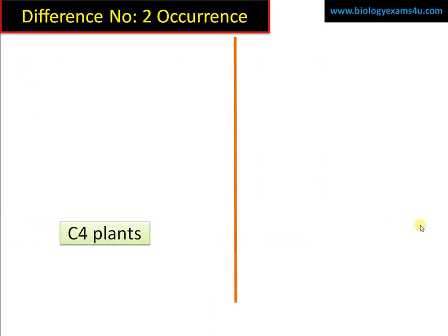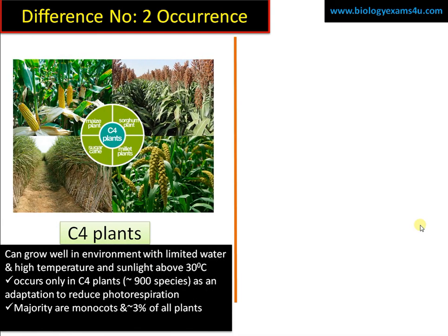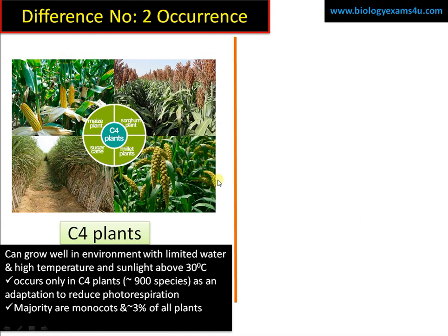Difference number two: occurrence. C4 plants include maize, sorghum, sugarcane, millets, etc. These plants can grow well in high temperature, high sunlight conditions — close to 40 degrees Celsius — where water availability is low. Approximately 900 species follow this pathway. The adaptation is primarily to reduce photorespiration, and the majority are monocots, accounting for nearly 3% of all plants.